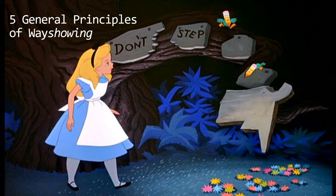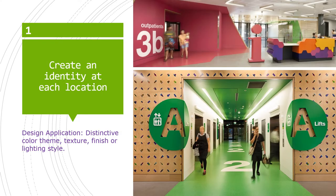We're going to go over five general principles of way showing. The first principle is: create an identity at each location. The principle is to give every location a unique perceptual identity so that the navigator can associate their immediate surroundings with a location in the larger space. The visitor's ability to recover position and orientation is the core wayfinding principle.